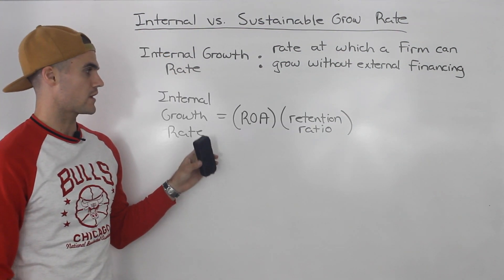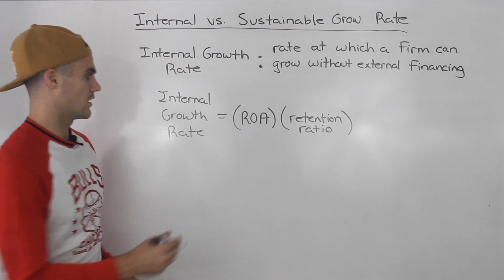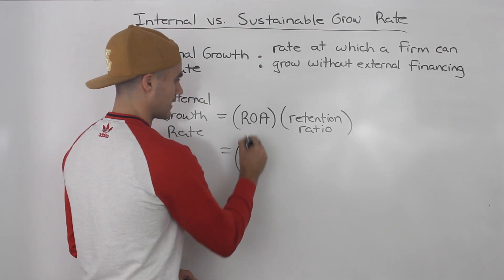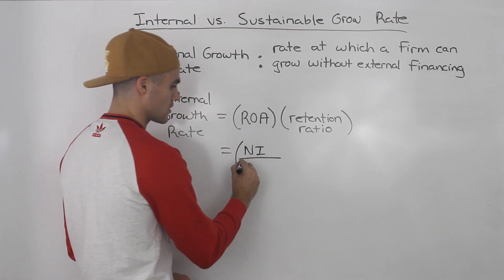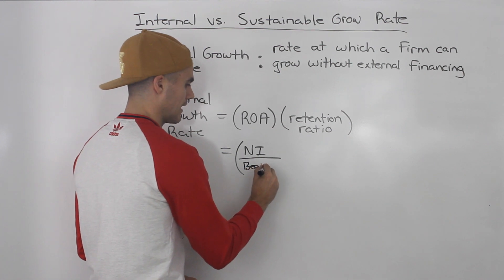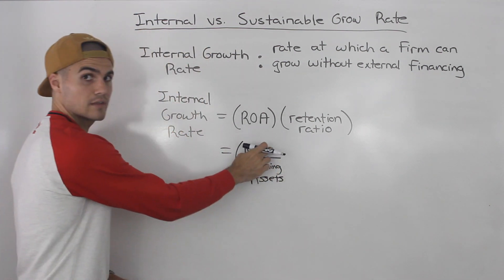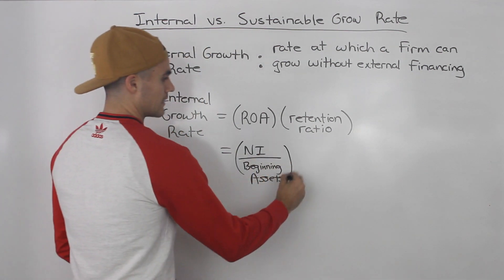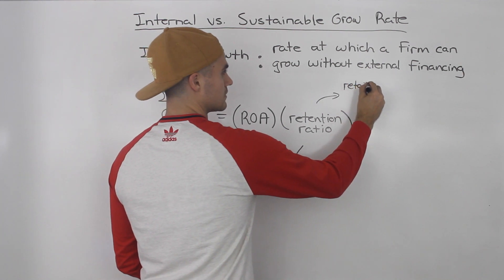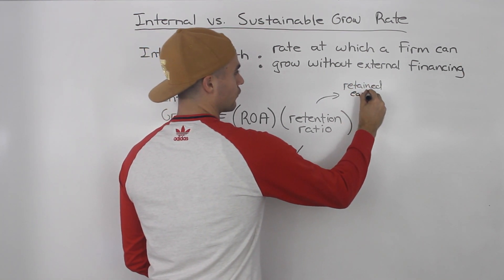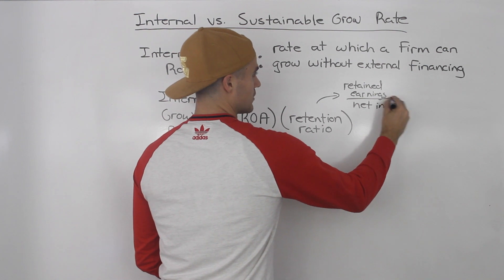If you want to express the internal growth rate as a formula, it's basically: return on assets times the retention ratio. Breaking it down: return on assets is net income over assets — and these are always the beginning assets, whatever the assets were at the start of the period that produced that net income. The retention ratio is retained earnings over net income, which was 70% in our example.